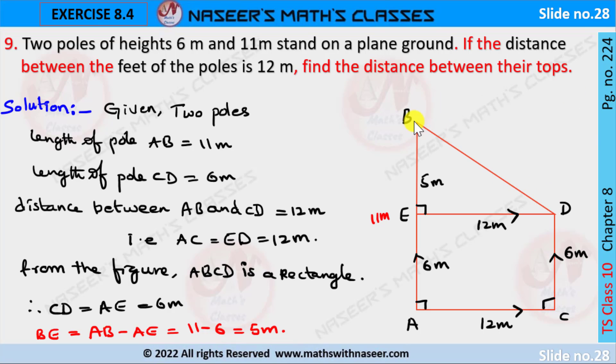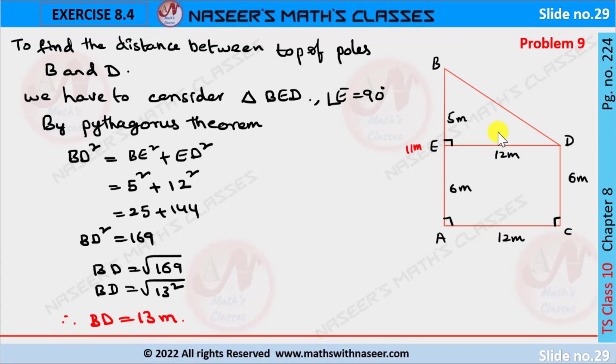We have to find the distance between the tops of the poles B and D. By using the Pythagorean theorem in triangle BED, we can find the distance. We consider triangle BED in which angle E equals 90 degrees. By applying the Pythagorean theorem, BD squared equals BE squared plus ED squared.